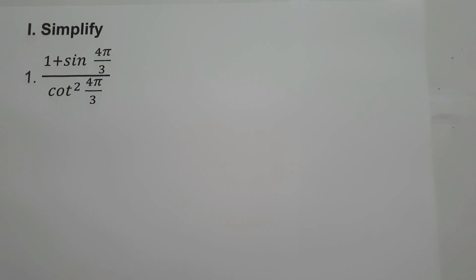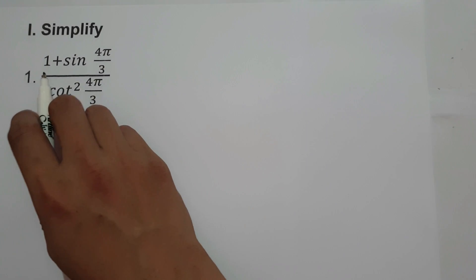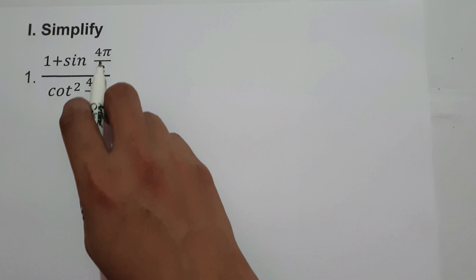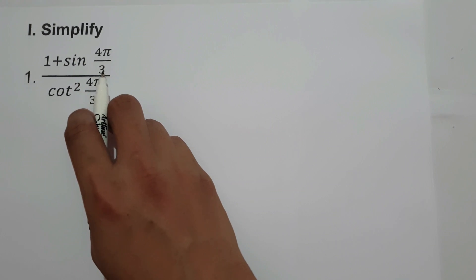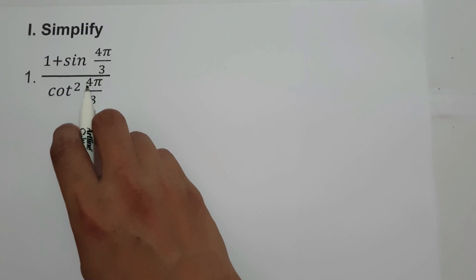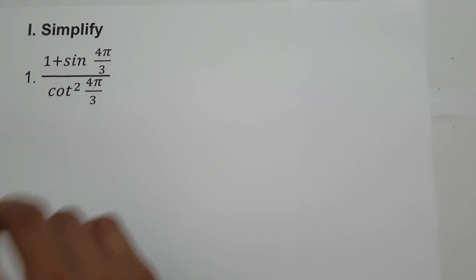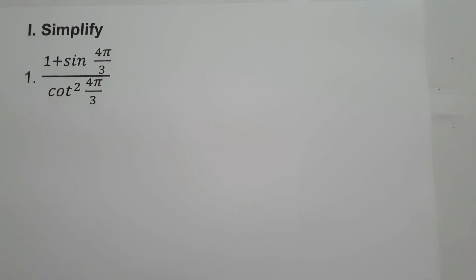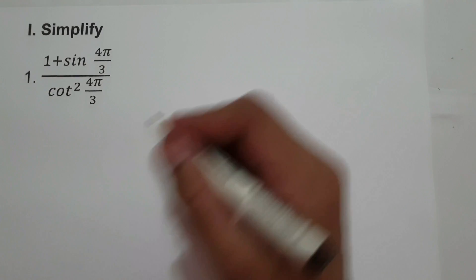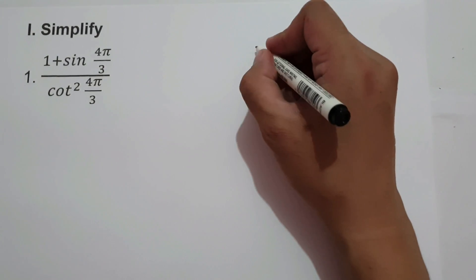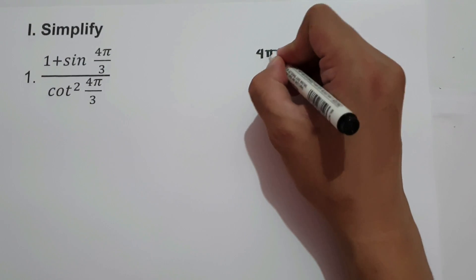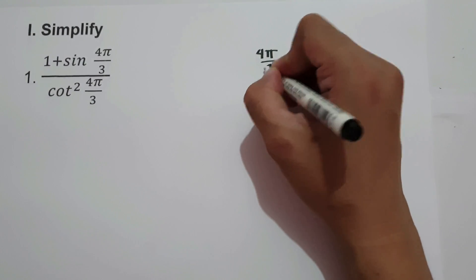In this video, we are going to simplify 1 plus sine 4π over 3, all over cotangent squared 4π over 3. To find the exact value of the given expression, let us convert the given radians to degrees — that is 4π over 3.